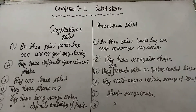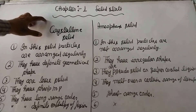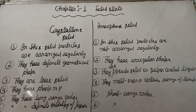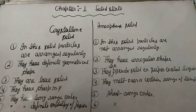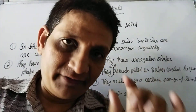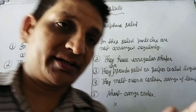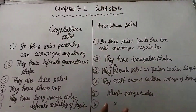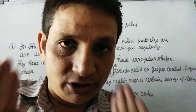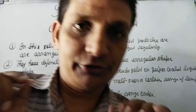Crystalline solids are anisotropic in nature, meaning their physical properties like refractive index and thermal expansion are different in different directions. Amorphous solids are isotropic in nature - their physical properties like refractive index are the same in all directions. So dear students, prepare it well. Good day, take care, God bless you.